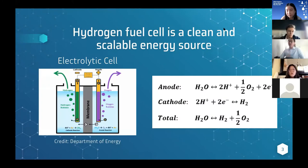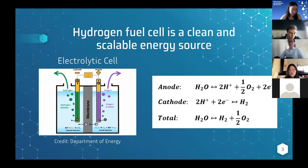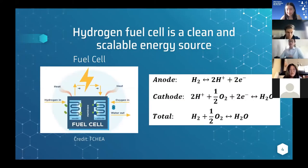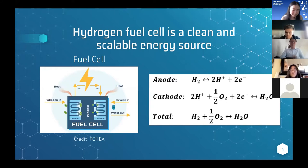The system has two main components: the electrolytic cell and the fuel cell. The electrolytic cell uses external electric energy to split water molecules into hydrogen gas and oxygen gas in a reaction called water electrolysis. The fuel cell, on the other hand, runs the reverse reaction — with the help of a platinum catalyst, it utilizes hydrogen fuel and oxygen gas to remake those water molecules, producing electricity.